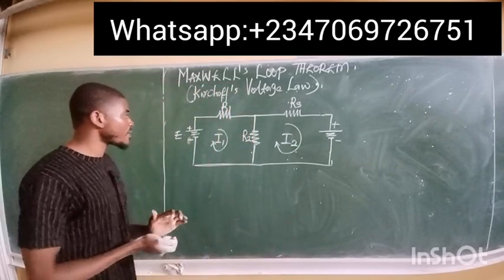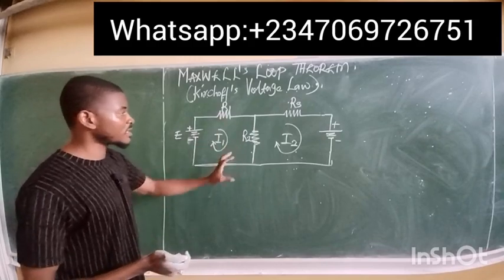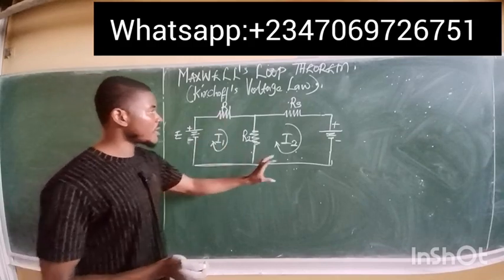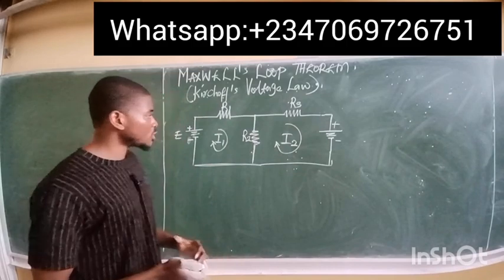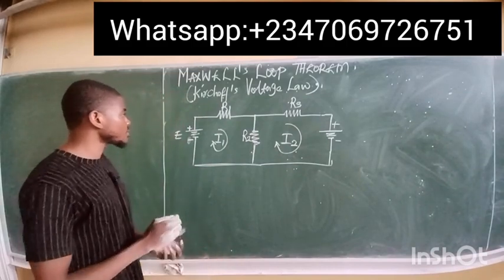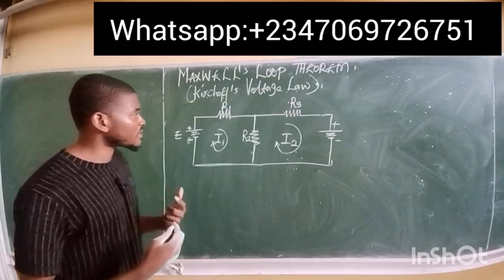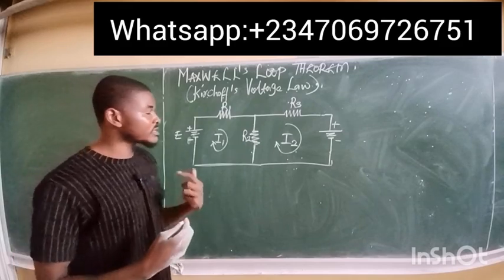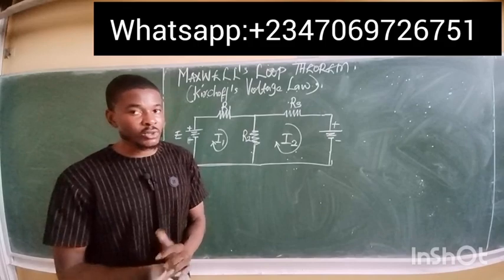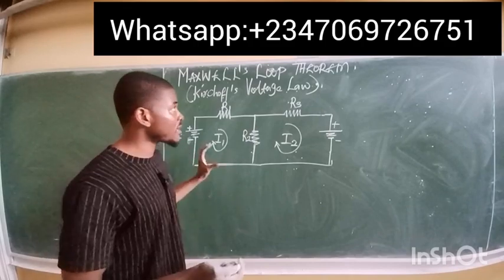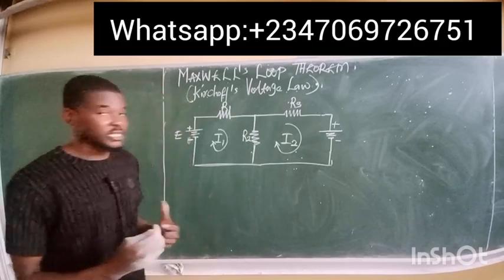Let's consider that we have a circuit with current i1 flowing through one particular loop and current i2 flowing through the other loop. How do we analyze this and determine the values of the resistors using Kirchhoff's voltage law, which is otherwise known as Maxwell's loop theorem?